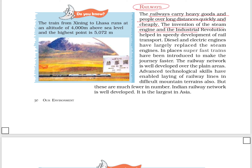The invention of the steam engine and the industrial revolution helped in the speedy development of transportation. In some places we have superfast trains with well-developed advanced technological skills. The Indian railway network is the largest in Asia. The train from Xining to Lhasa runs at an altitude of 4,000 meters above sea level, with the highest point at 5,072 meters.